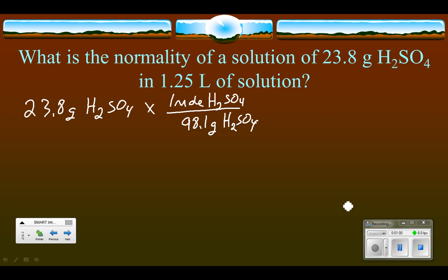So the grams of sulfuric acid cancel out, and that gives us 0.243 moles of sulfuric acid. If I'm going to find the molarity, I just divide that by the volume. It's already in liters for us, so that's nice. Gives us 1.25 liters on the bottom.